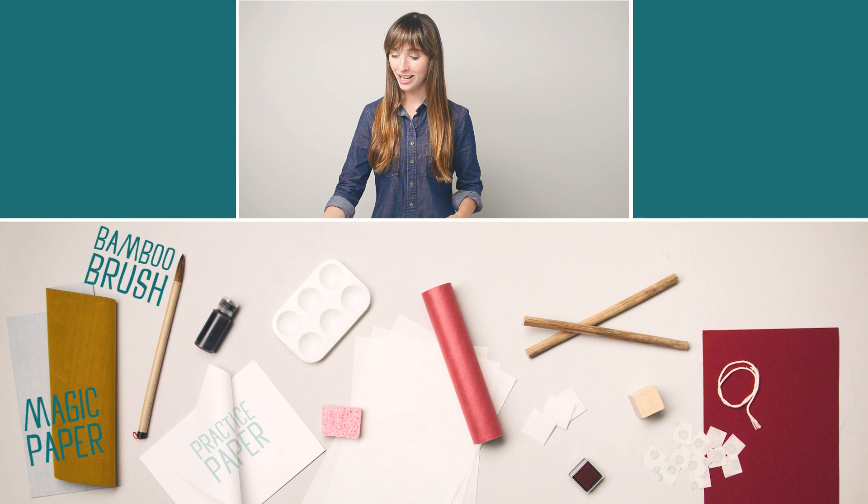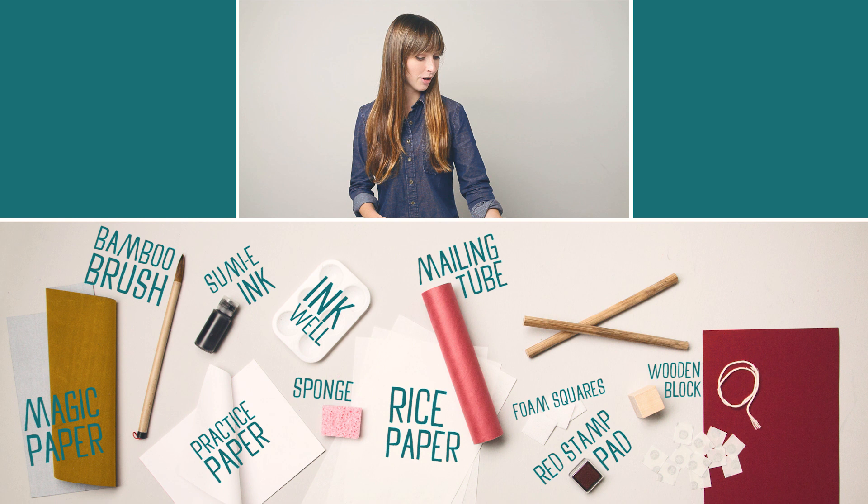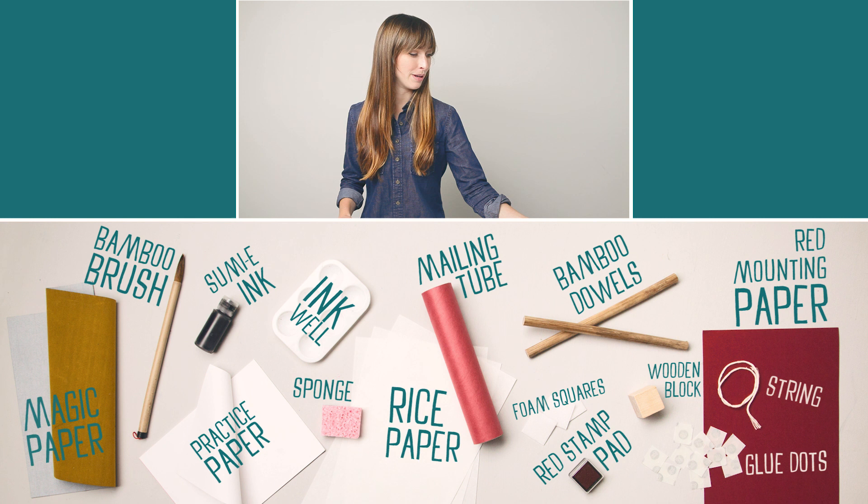This crate includes a sheet of magic paper, a bamboo brush, a pad of practice paper, a jar of Sumi ink, an inkwell, a sponge, some rice paper, a mailing tube, a red stamp pad, three foam squares, a wooden block, two bamboo dowels, string, some glue dots, and a piece of red mounting paper.